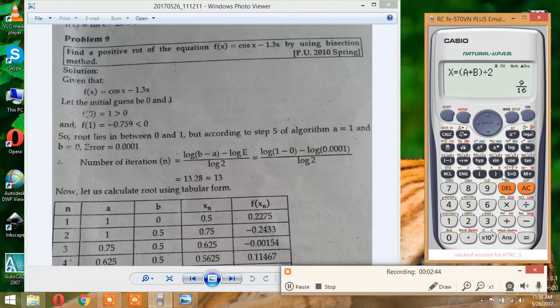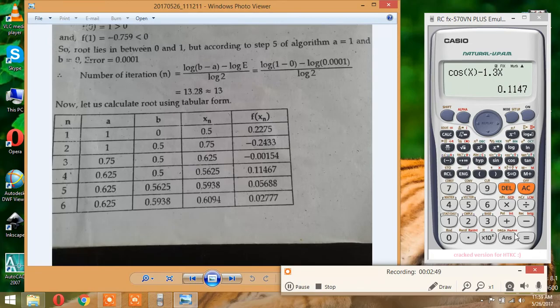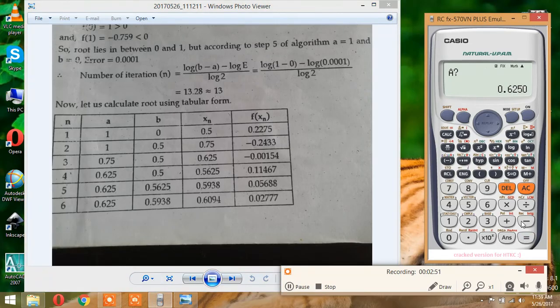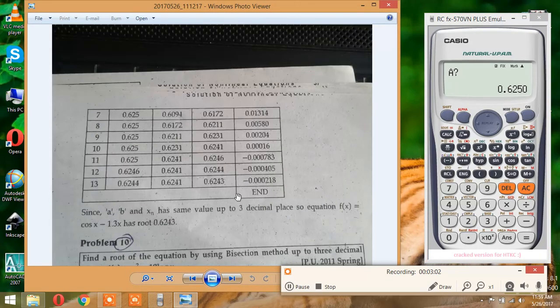B is the same so we get the value of X. Now again since it is positive we continue with the value of a, we assign value X to B, and we get X. So we continue to do this and we'll get the final value as 0.6243 as the answer of the problem.